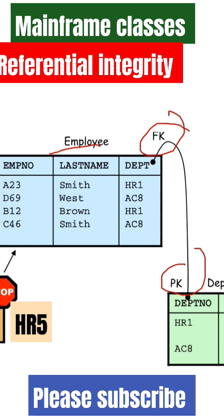An employee who worked in department HR 5 cannot be entered into the employee table. Why? Because there is no corresponding entry in the department table. Here in the department table we have HR 1 and AC 8, but there is no entry for HR 5.